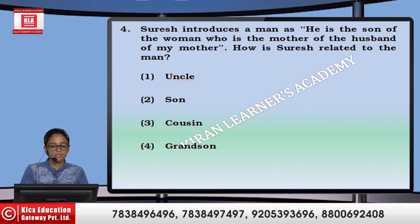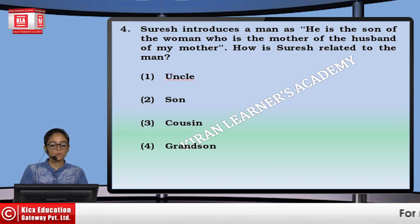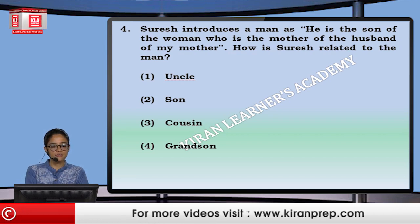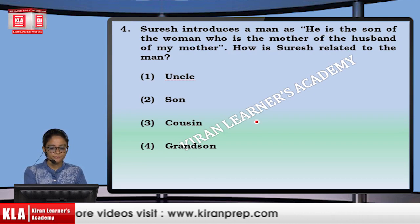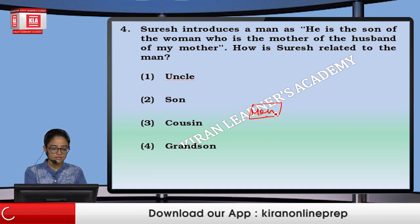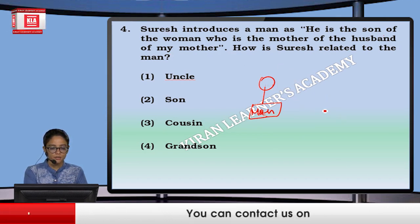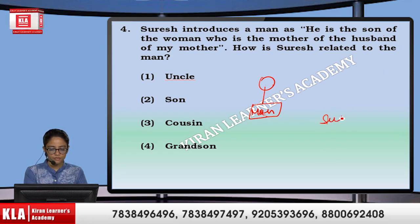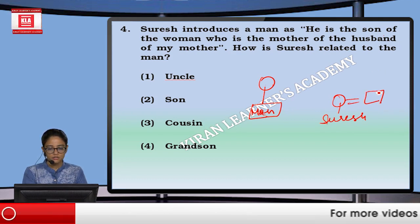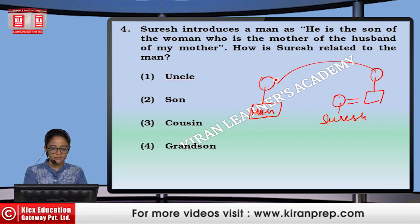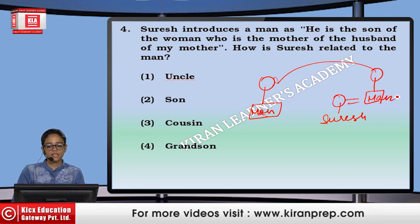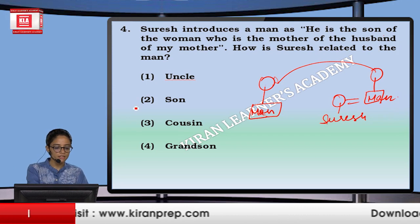Next question is of indirect type. Indirect type means we help out with some other reference — we take some reference and then solve the question. Suresh introduces a man: he is the son of a woman who is the mother of the husband of my mother. Suresh mother's husband — this mother and this mother are the same. How is Suresh related to man? Suresh is son of man. That means second option.